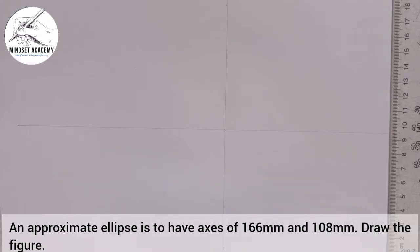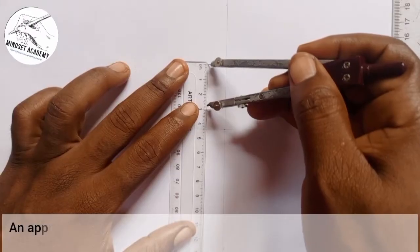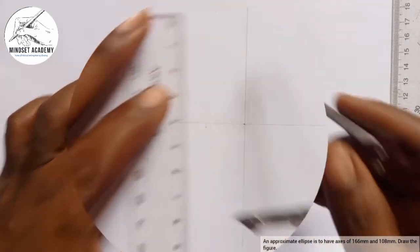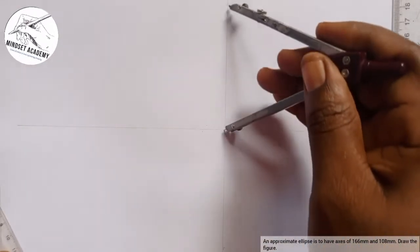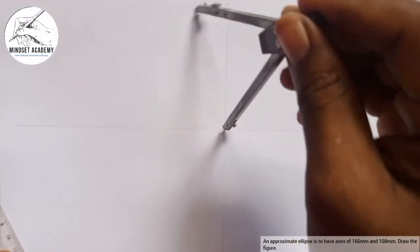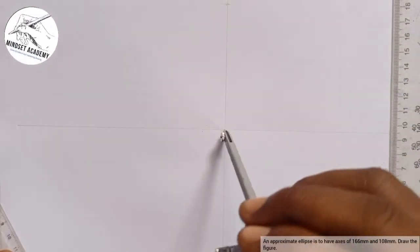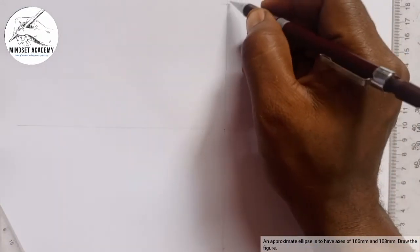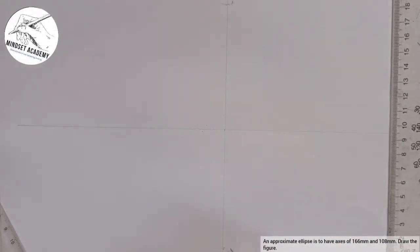The 166 will be on the vertical. So I am going to measure half of 166, which will be 83. From this point, this is 81, 82, 83 here. I will place it at the center and mark it up and mark it down. That point will be my point A and also my point B.